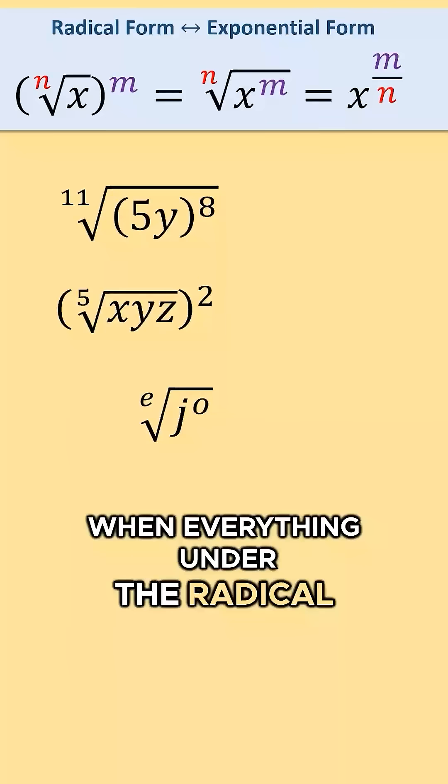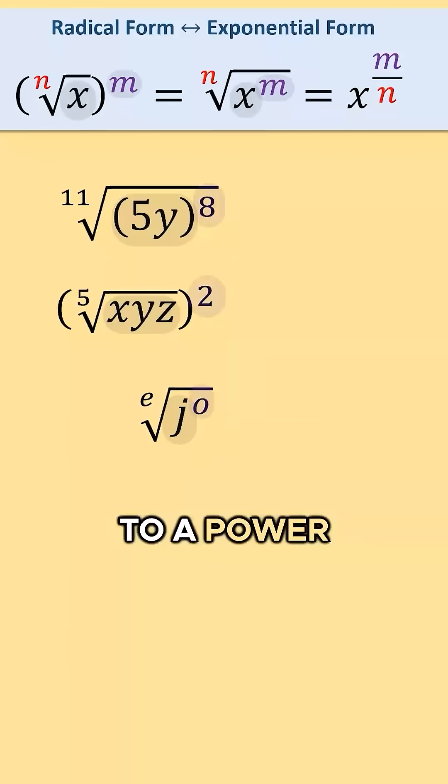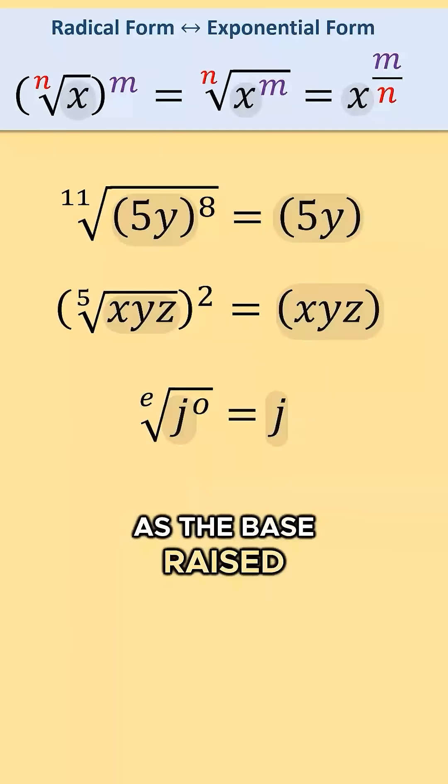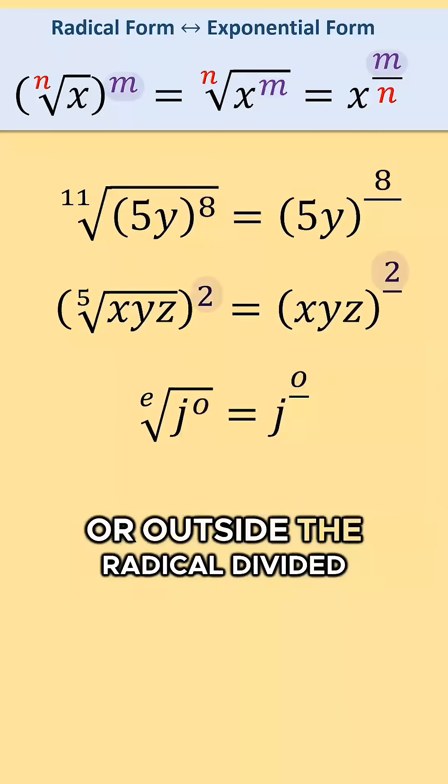When everything under the radical is grouped together and raised to a power, it can be rewritten as the group term as the base raised to the power inside or outside the radical